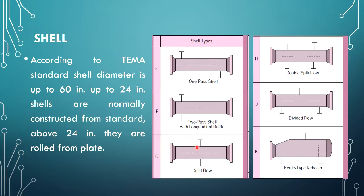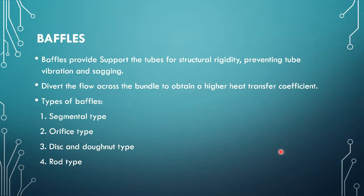According to TEMA standards, the main types of shell are: E type, F type, G type, H type, J type, and K type. In most applications, E type and F type shells are used, and in kettle type reboilers the K type shell is used.